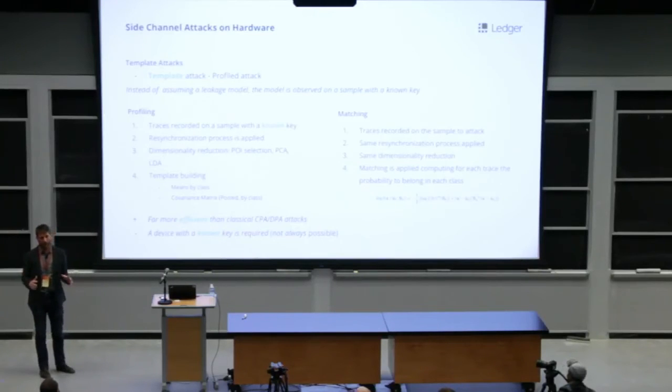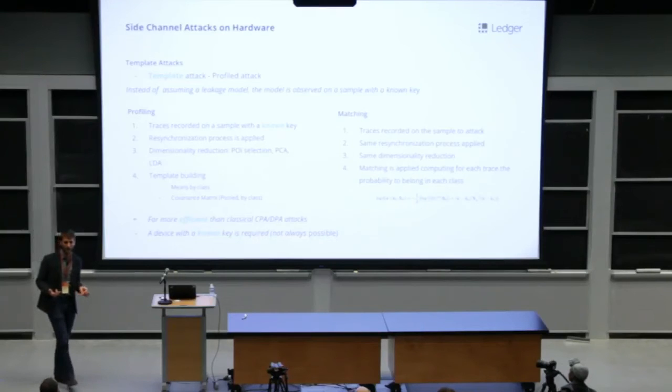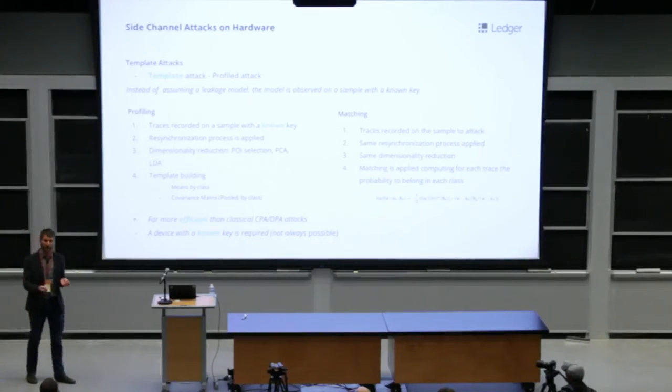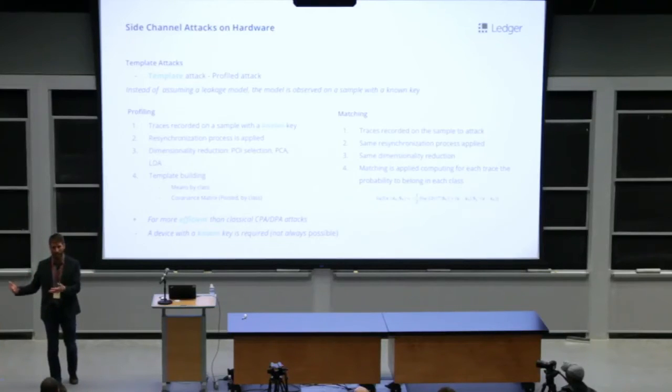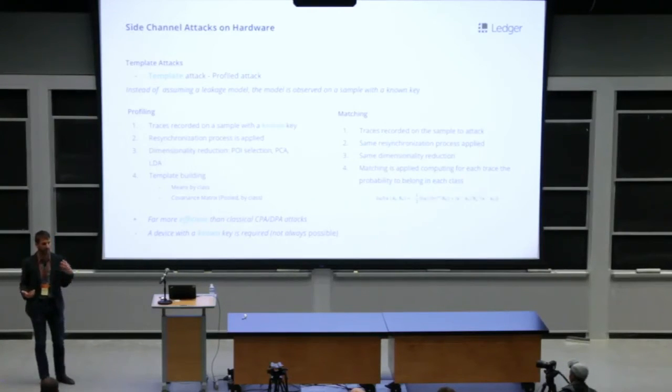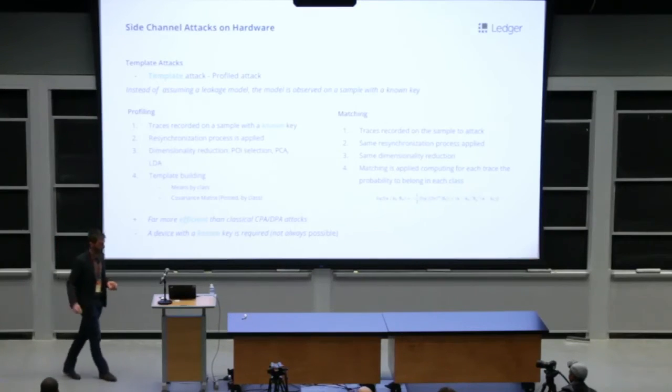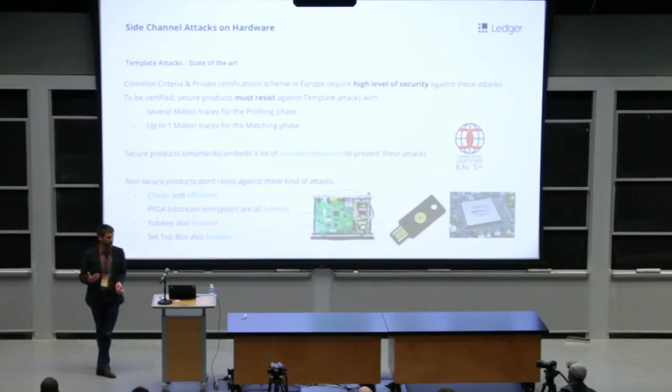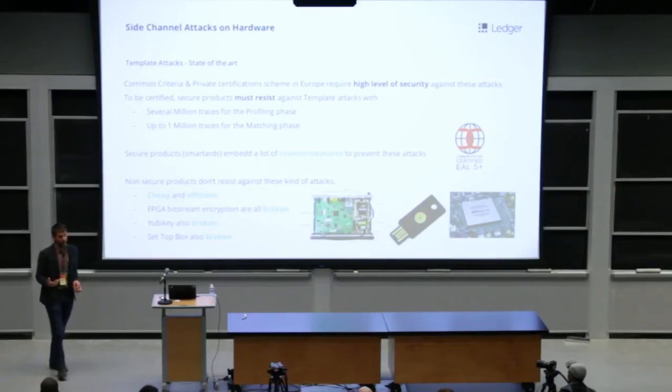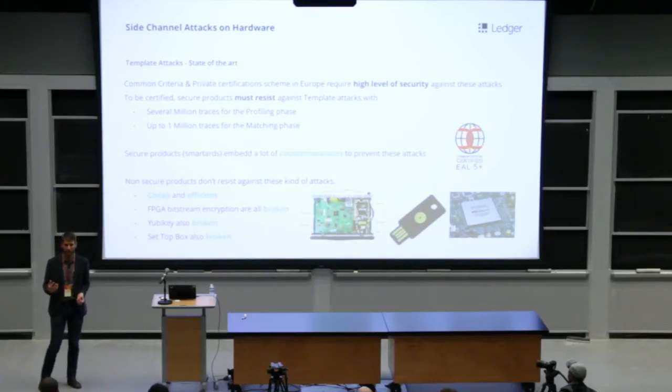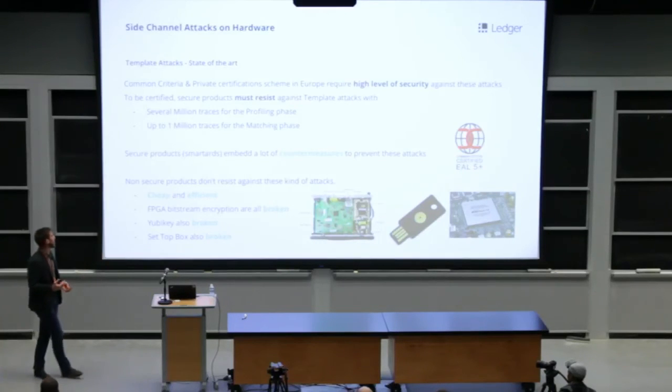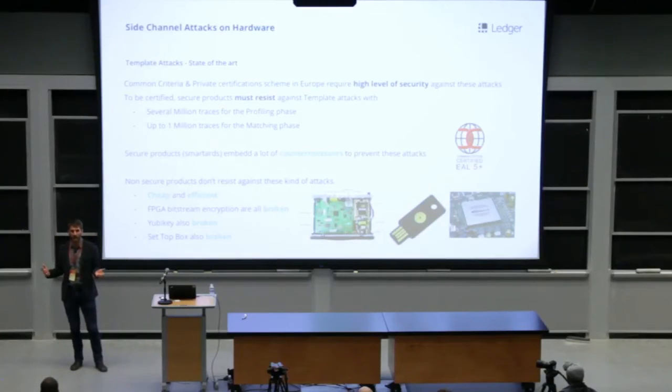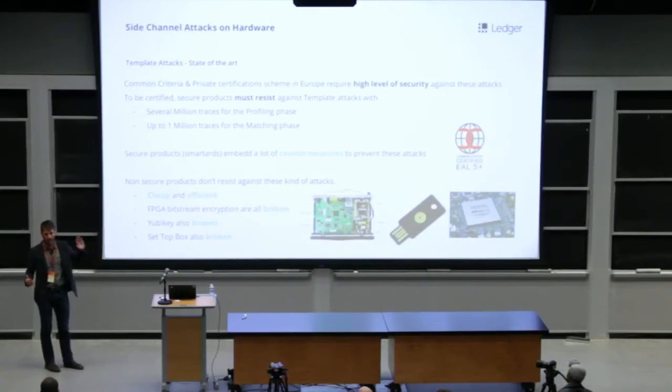Template attacks use again the same phenomenon, but instead of assuming a power consumption model, in this case, the attacker observes the power consumption model on a sample on which he knows the key, and then he attacks another one. This kind of attack is even more efficient than the CPA, but however, it requires the attacker to have a sample with a known key, which is often the case. It depends. Common criteria requires a high level of security against those kind of attacks. To be certified, the secure element must resist to those attacks, even with a large number of traces. And if you don't use secure hardware, it's impossible to prevent those kind of attacks. And there are plenty of examples of non secure hardware which have been broken using this technique.